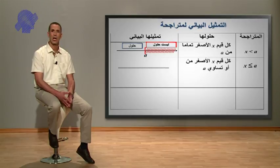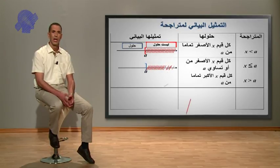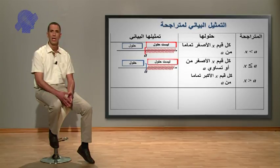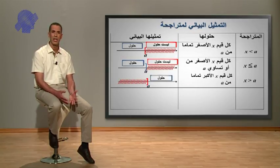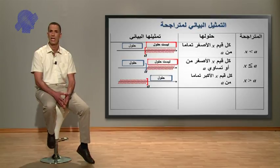ثانياً: X أصغر أو يساوي من A، كل قيم X الأصغر أو تساوي A هي حلول لهذه المتراجحة، الجزء المشطب غير حلول أما الجزء الآخر الأصغر من A فهو حلول. ثالثاً: X أكبر تماماً من A، حلولها هي كل قيم X الأكبر تماماً من A، الجزء المشطب غير حلول أما الجزء الأكبر من A فهو حلول.